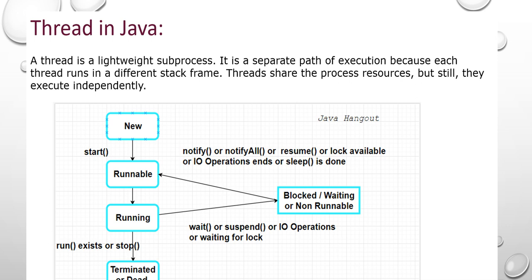While running, if you call the wait method or suspend method, or if any IO operations are there, the thread will go from running state to blocked state — we can call it waiting state. We can resume that by calling notify method or notifyAll, meaning all waiting threads will come back to runnable state. Once a lock is available, the thread will come back to runnable state. It is handed over to the Thread scheduler, which decides when to run, which thread to run, and how much time the thread has to be executed — depending upon the operating system.